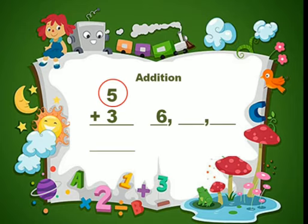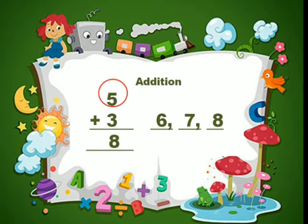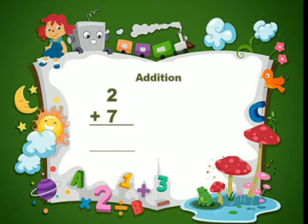After 5, count: 6, 7, 8. You count 3 numbers after 5 because 3 is the smaller number. The answer is 8. Did all of you understand, children? Let's move on to the next question.